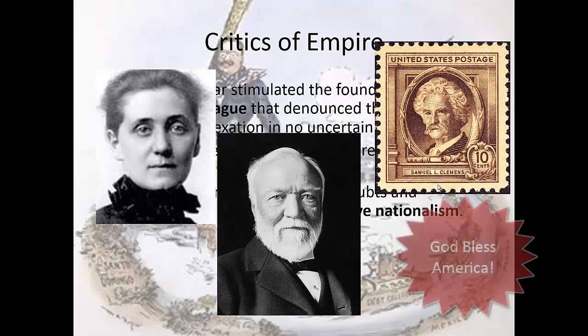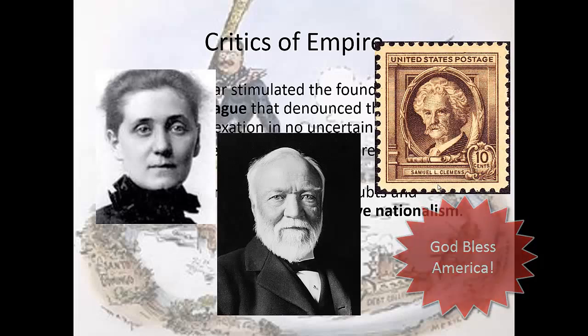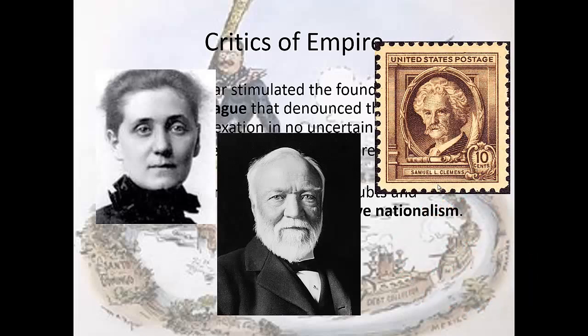They cite democratic reasons as well as racist reasons for anti-imperialism — that America, just like Turner had said, had developed its own unique identity based on democracy and the expansion of the frontier, and that other countries should be entitled to the same experience, as well as not wanting to bring in different races to the United States and to the American sphere.